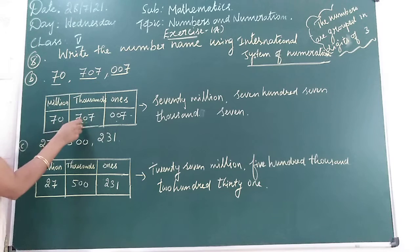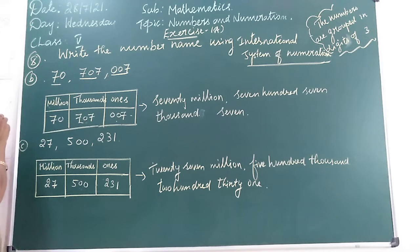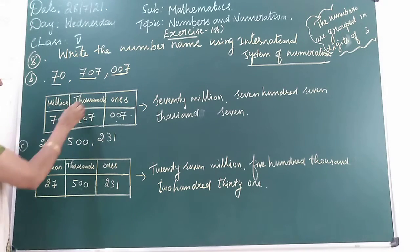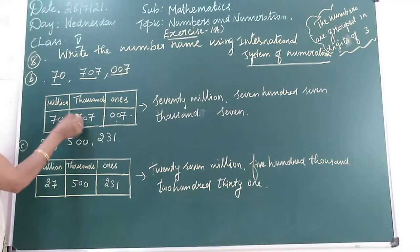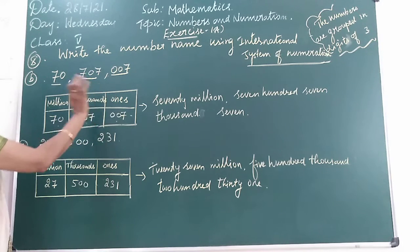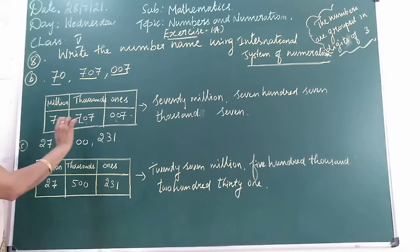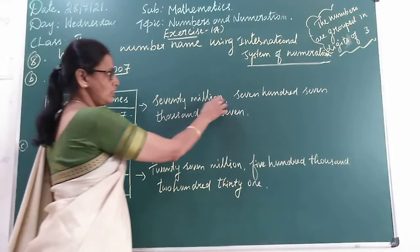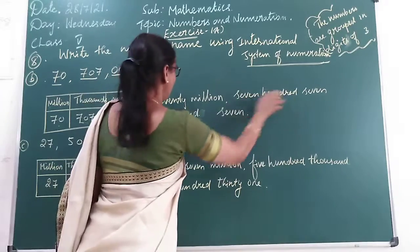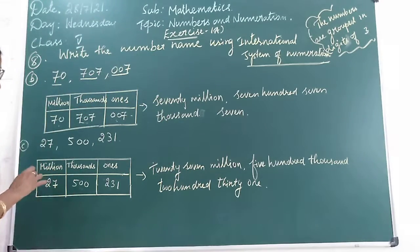In thousands place we have 707. In millions place we have 70, children. Now we are going to write the number name. So, 70 million, 707 thousand, seven. That's all - 70 million, 707 thousand, seven, children. You know the places. Now next sum.